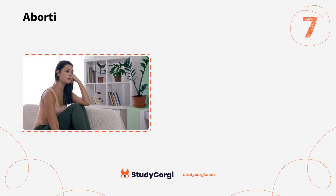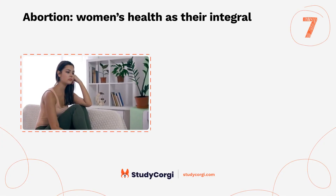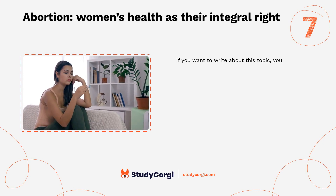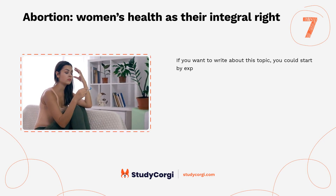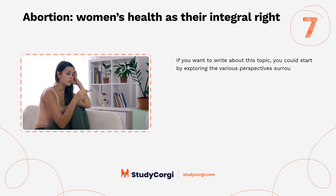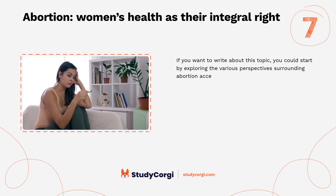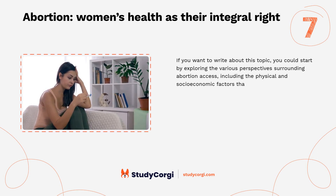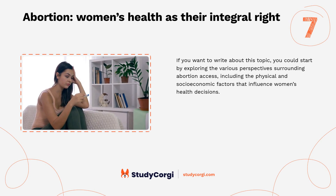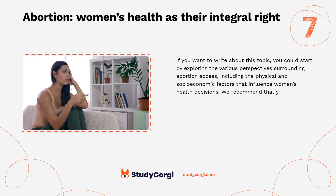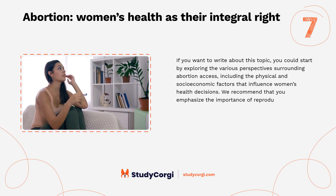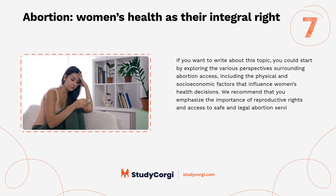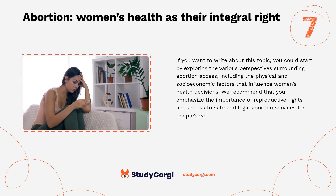Abortion — women's health as their integral right: if you want to write about this topic, you could start by exploring the various perspectives surrounding abortion access, including the physical and socio-economic factors that influence women's health decisions. We recommend that you emphasize the importance of reproductive rights and access to safe and legal abortion services for people's well-being and autonomy.